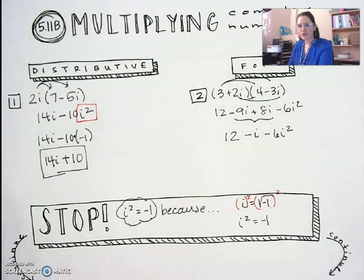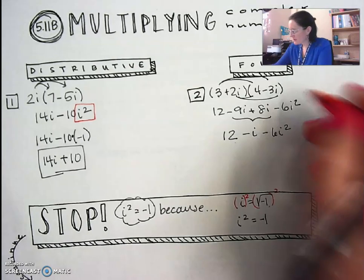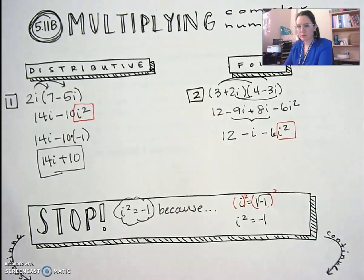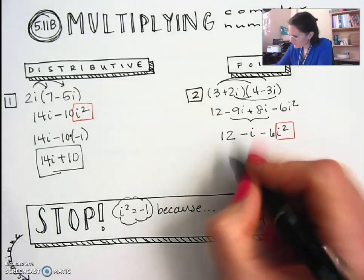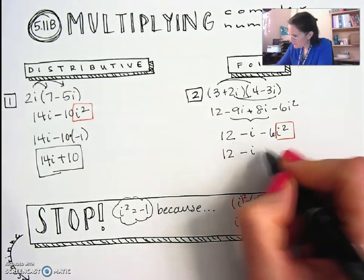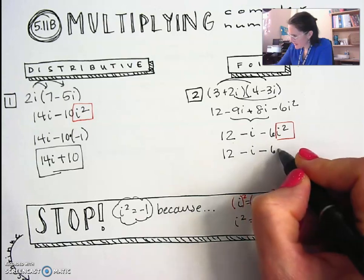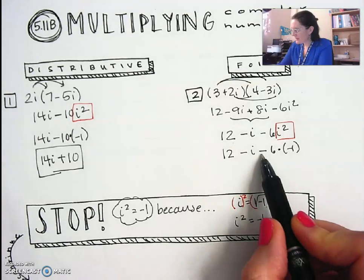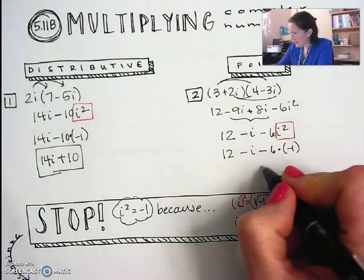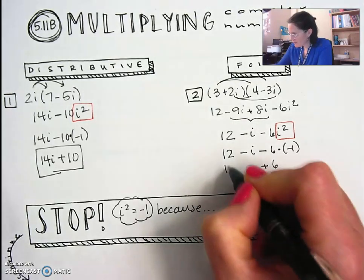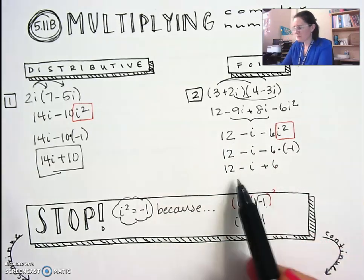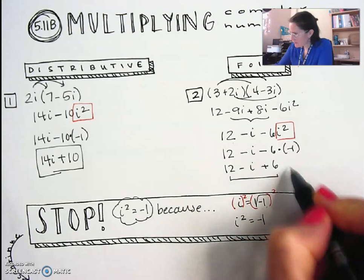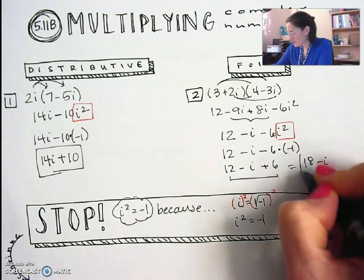And on the answer for number 2, my i squared is right here. I'm going to replace that with a negative 1. So remember it's times negative 1. So I have a negative 6 times negative 1. That will become positive 6. And I still have the 12 minus i, and now the 12 and the 6 can combine, leaving me 18 minus i.